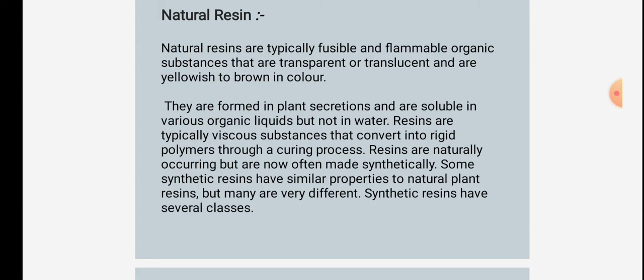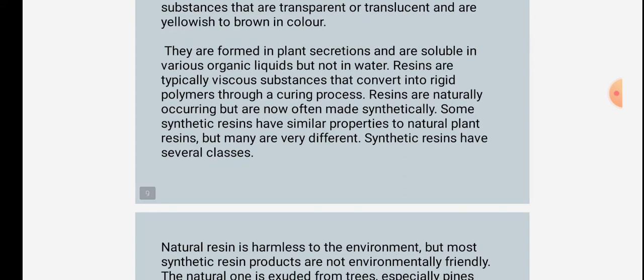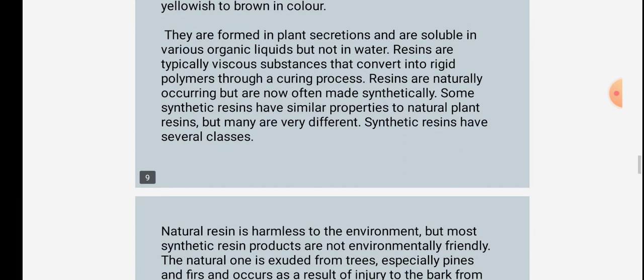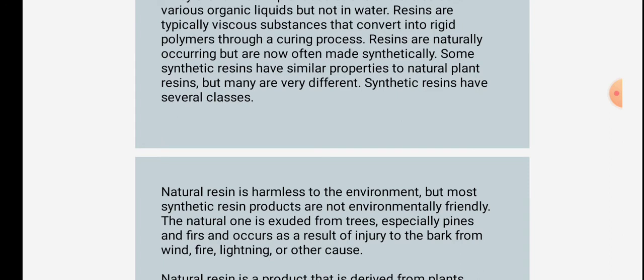Natural resins are typically viscous and flammable organic substances that are transparent or translucent and are yellowish to brown in color. They are formed in plant secretions and are soluble in various organic liquids but not in water. Resins are typically viscous substances that convert into rigid polymers through a curing process. Resins are naturally occurring but are now often made synthetically. Some synthetic resins have similar properties to natural plant resins.